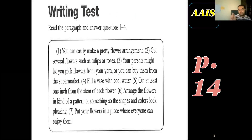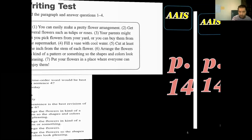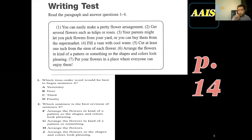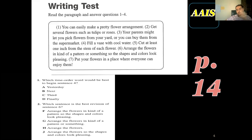I expect that you pause the video now and read the passage. Let's look at question one: which time order word would be best to begin sentence four? So we go back to sentence four. But they say which time order word — I can't do this unless I remember what happened in the beginning, so you have to reread the passage from the first sentence. They said you can easily make a brief flower arrangement — this is number one, the topic sentence. This is what the passage is about.